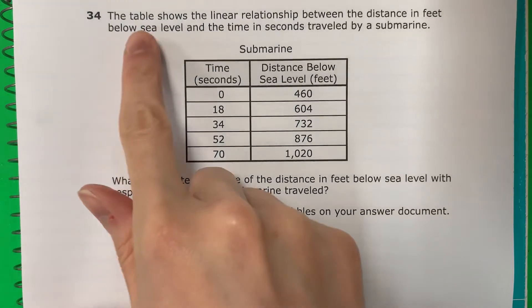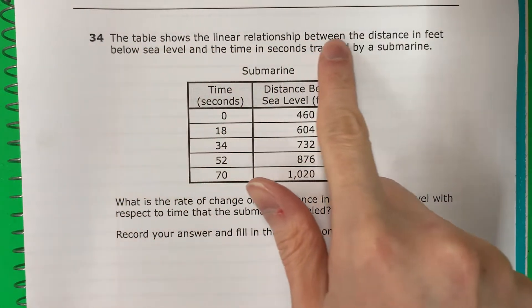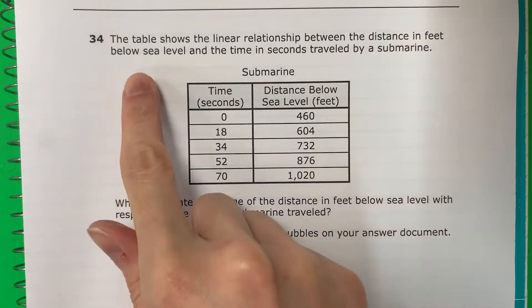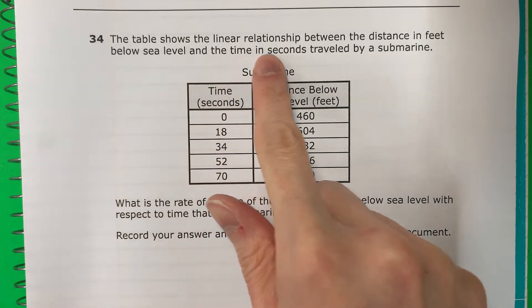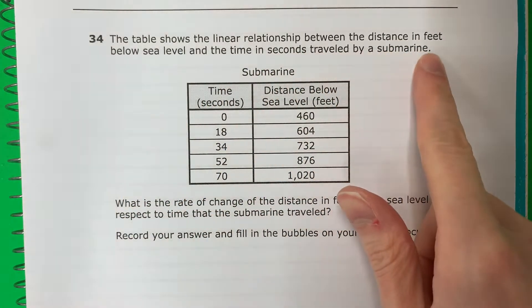Question 34. The table shows the linear relationship between the distance in feet below sea level and the time in seconds traveled by a submarine.